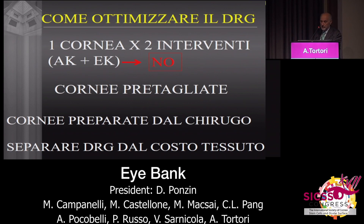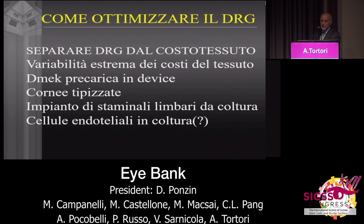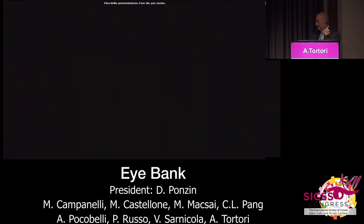To optimize costs, it is not possible to treat pre-cut corneas at the same cost as a normal cornea, or corneas prepared by a surgeon, or to separate the DRG from the cost of the tissue, since the cost of tissue is highly variable. For typified corneas the cost is even higher, and for stem cells it is higher still — however, these are niche indications. Thank you.